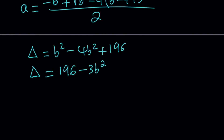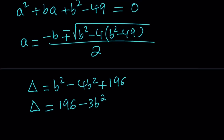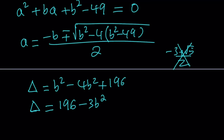This is our discriminant. We not only want it to be greater than or equal to zero in order to have real roots, but we also want this expression to be a perfect square. Why? Because we want integer solutions. If the expression under the radical is not a perfect square, its square root won't be rational and we won't get integer solutions. For example, something like negative 3 plus root 5 over 2 obviously can't be an integer. So we want delta to be a perfect square.